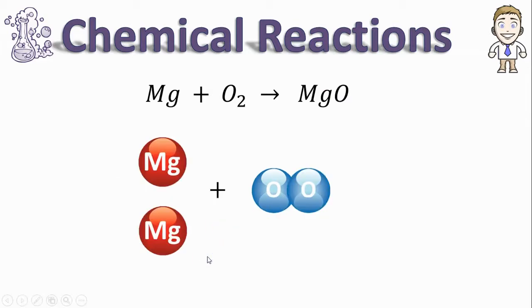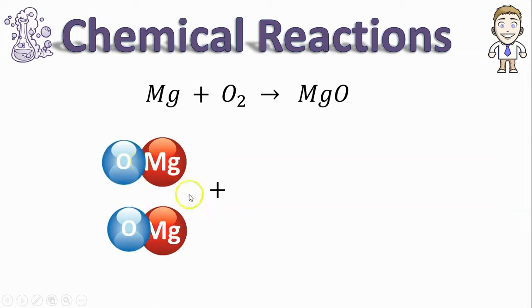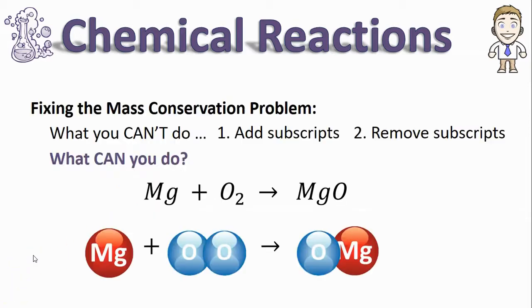You could imagine a different scenario where you've got the O2 but this time two separate magnesium atoms. Now an oxygen atom has a place to go. We've made the product MgO. My second oxygen atom also now has a place to go to make a second MgO. We're still making the same product. We're just making two of them.